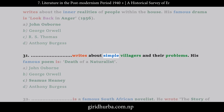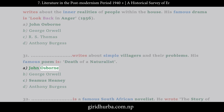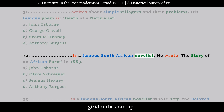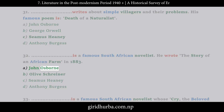Question 31: Who writes about simple villagers and their problems, with famous poem Death of a Naturalist? A. John Osborne. B. George Orwell. C. Seamus Heaney. D. Anthony Burgess. Question 32: Who is a famous South African novelist who wrote The Story of an African Farm in 1883? A. John Osborne. B. Olive Schreiner. C. Seamus Heaney. D. Anthony Burgess.